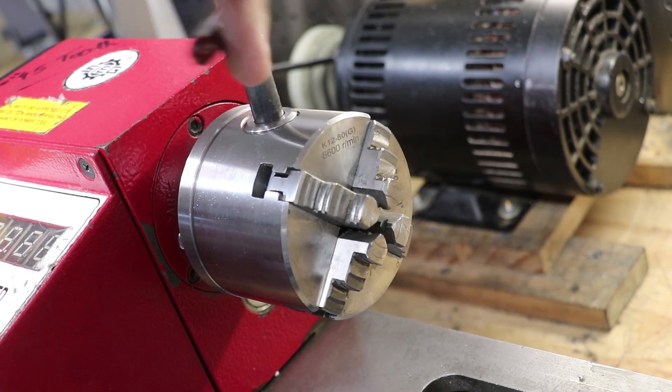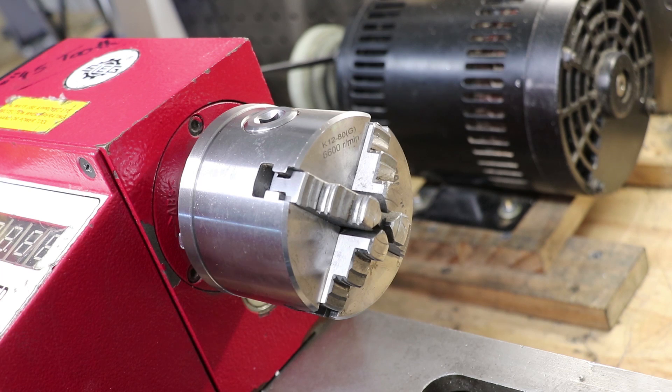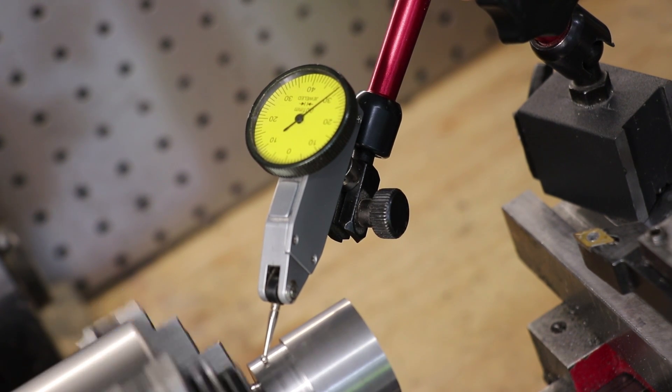The four jaw scroll chuck is really well made for the price and it gives me about 40 microns of run-out. However, with the independent chuck, with the dial test indicator, I can get it down to about 10 microns or below of run-out.